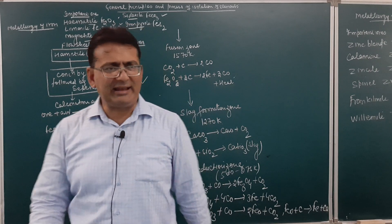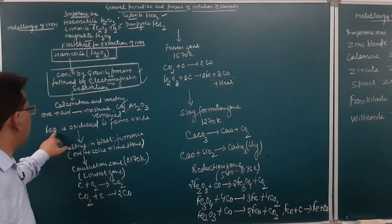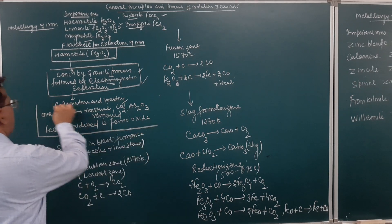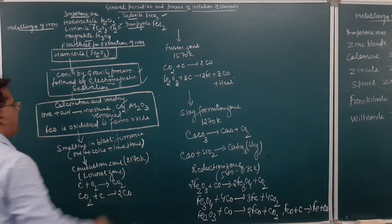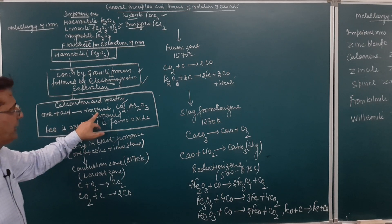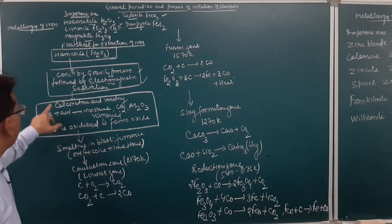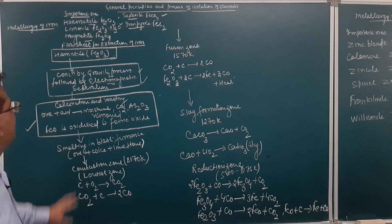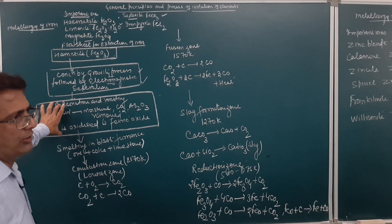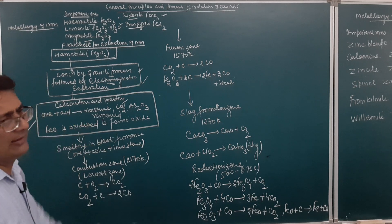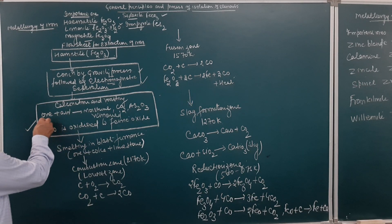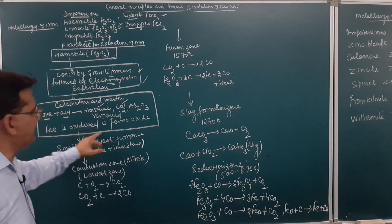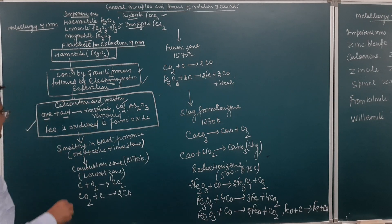After concentration, the next step is conversion of the ore into oxide form. This is done by calcination and roasting. The ore is heated in the presence of air, where impurities like moisture, carbon dioxide, and arsenic oxide are removed, and ferrous oxide is oxidized to ferric oxide.